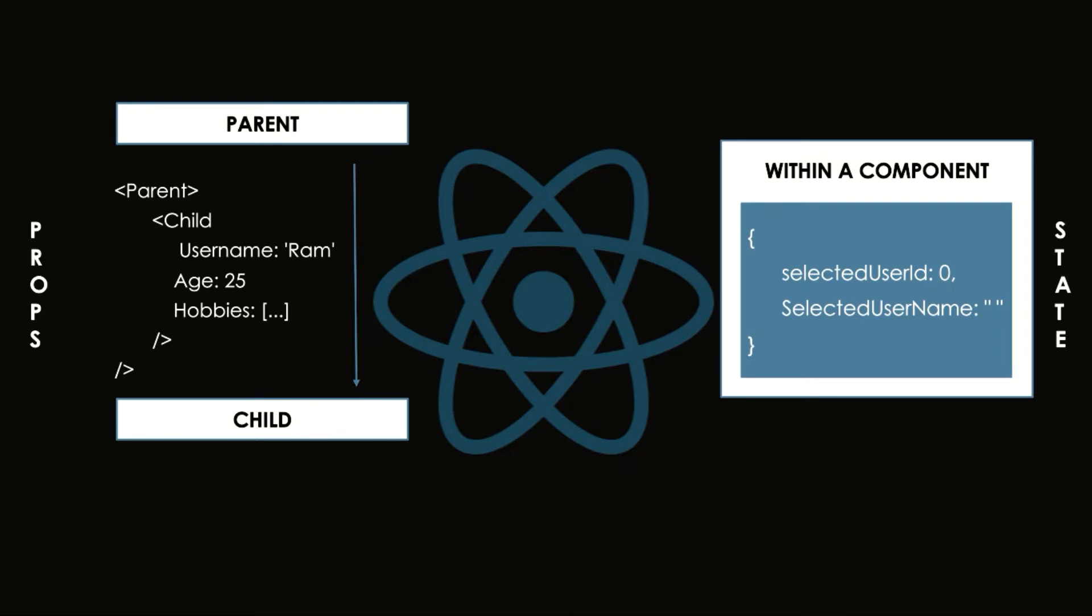Next, parent components pass data to child components using props. So props establish parent to child communication. Whereas state is internal to a component and holds information of that specific component.